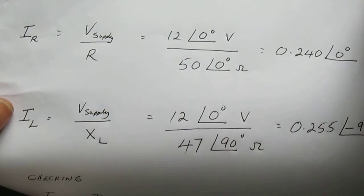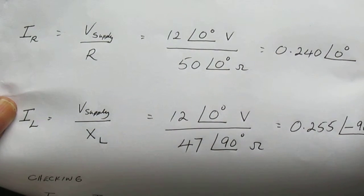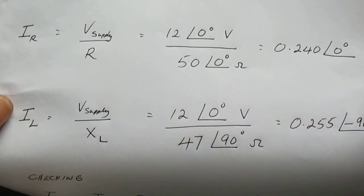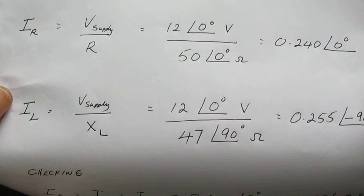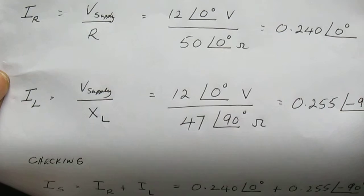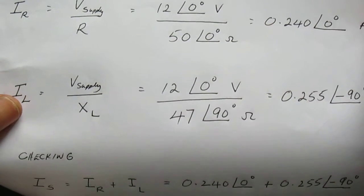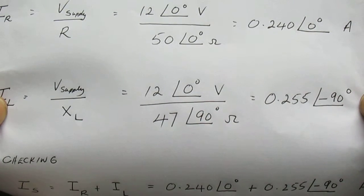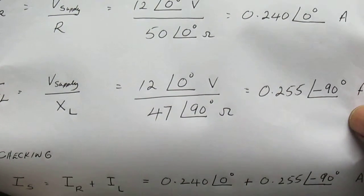The current through the inductor - remember it's a parallel circuit so the voltage supply is the same across the resistor. It is 12 angle 0 volts divided by 47 angle 90 ohms, which results in 0.255 angle negative 90 degrees amps.